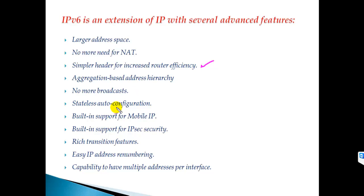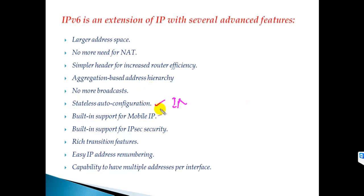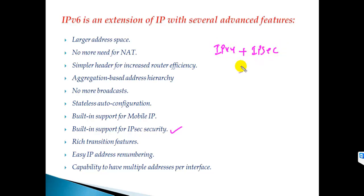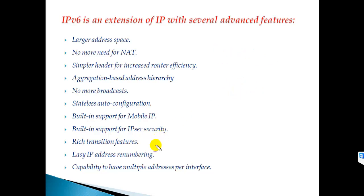IPv6 also supports stateless auto-configuration, where a device can get an IPv6 address by including its own MAC address — we'll cover that in detail in a separate section. It also has built-in support for mobile IP, allowing you to move around with your IPv6 address. Additionally, IPv6 has inbuilt IPsec security, whereas in IPv4 you need to separately integrate IPsec to provide high-end security. IPv6 also offers an easy way of IP address renumbering.